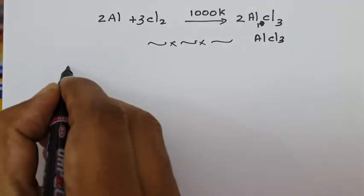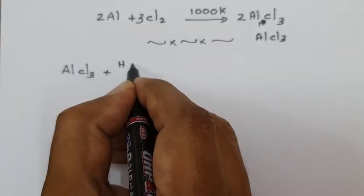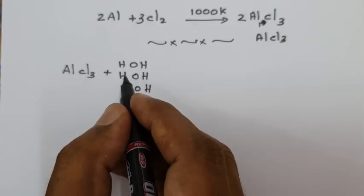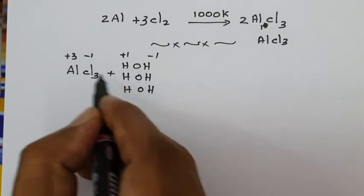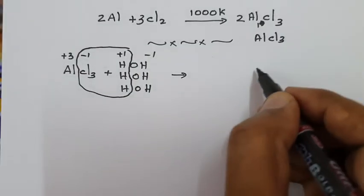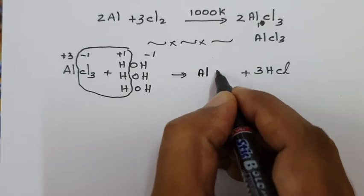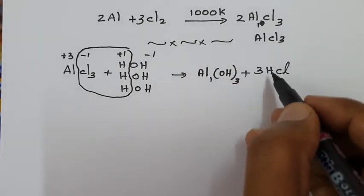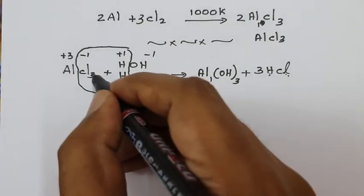Now for properties. First property: hydrolysis of Aluminium Chloride. AlCl₃ has 3 chlorines, so 3 water molecules are added. Al is 3+, Cl is −1, H is +1, OH is −1. The Cl⁻ combines with H⁺ to remove 3 molecules of HCl. Al³⁺ combines with OH⁻ to give Aluminium Hydroxide. Because hydrochloric acid (a strong acid) is formed, the aqueous solution of Aluminium Chloride is acidic.